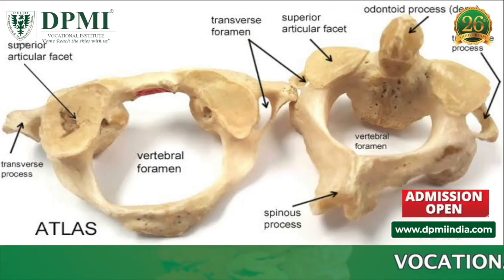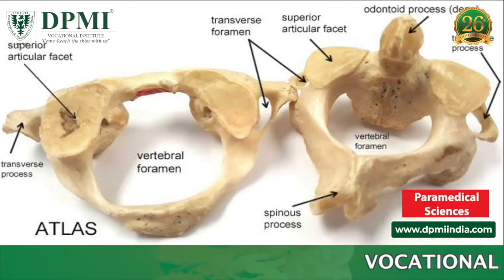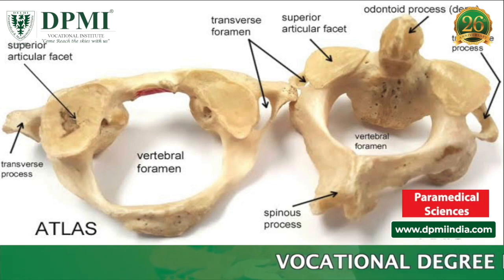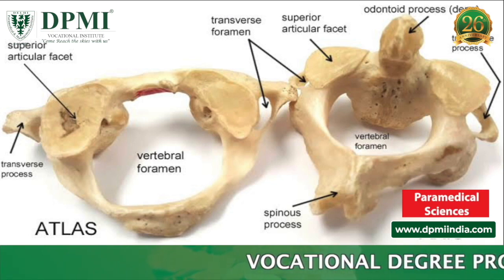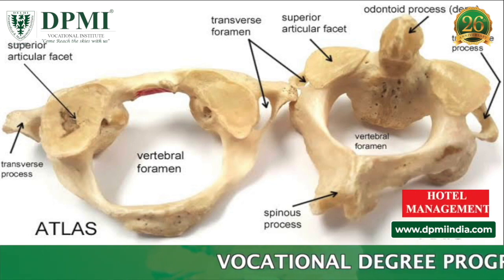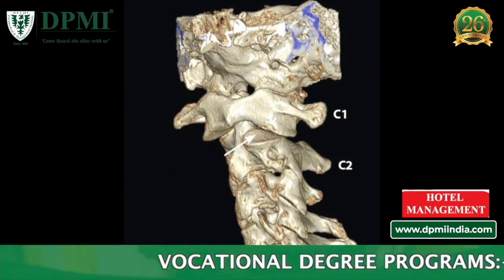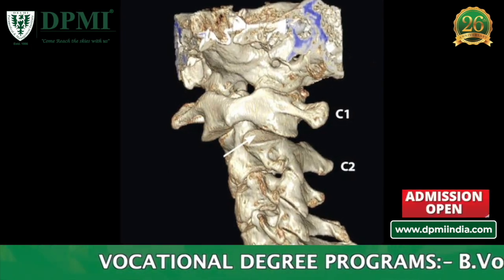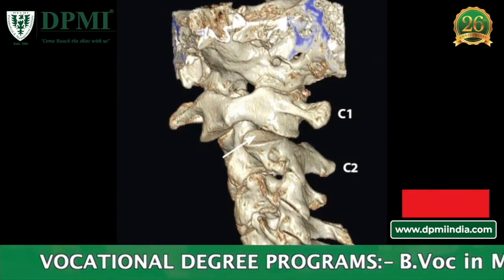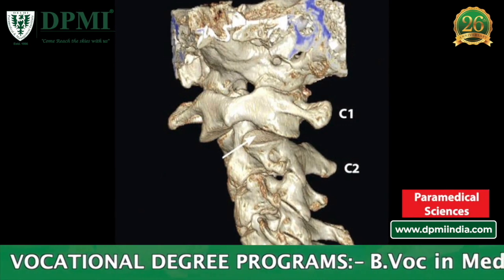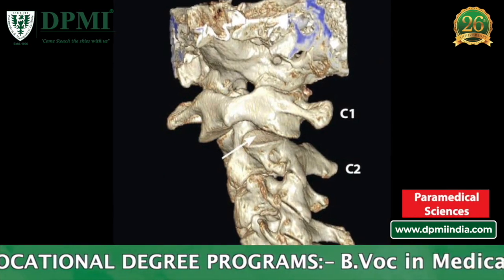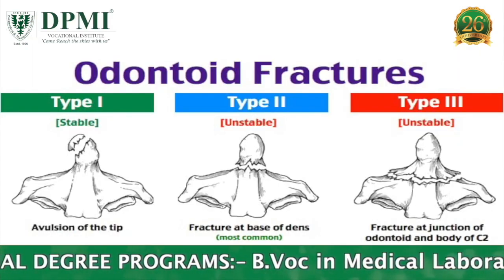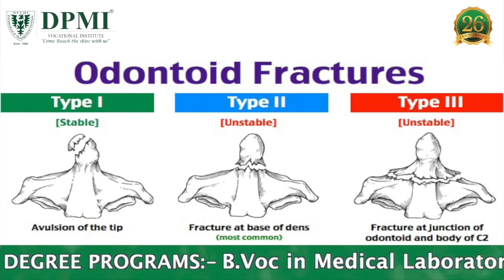Cervical AP Open Mouth. The cervical AP open mouth view examines the pathology of C1 or C2 vertebrae. Indications for this x-ray include pathology, particularly fractures involving C1 and C2 and adjacent soft tissue structures, and demonstrates odontoid fractures.